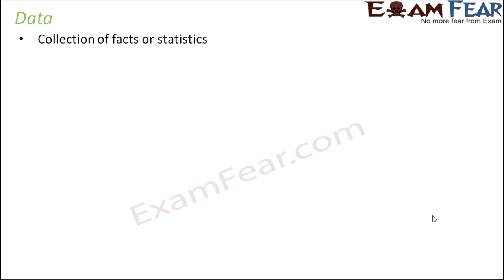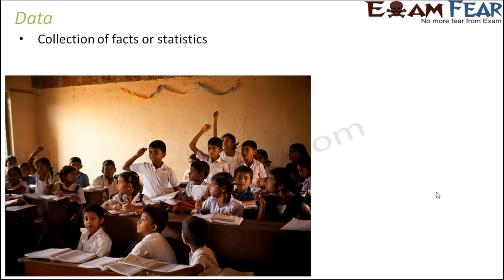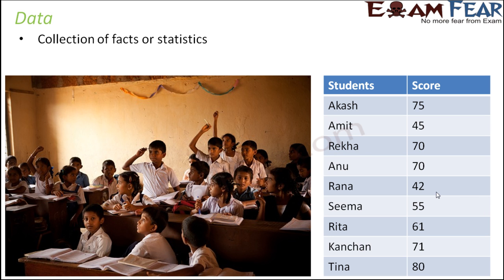Before we go further, let's clearly understand what data is. Data is nothing but a collection of facts or statistics, and these facts could be anything — not only student scores or attendance. For example, when you look at the scores of students in a class, that is data. Here we see a table with the names of students and their respective scores: Akash scored 75, Amit scored 45, Rekha 70, Anu 70, Rana 42, and so on. This is data because it gives you facts and statistics about the entire class.